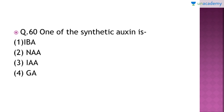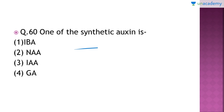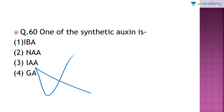Question number 60: Which one of the following is a synthetic auxin? The right answer is option number two — NAA (naphthalene acetic acid) is a synthetic auxin. IBA (indole-3-butyric acid) is both synthetic and natural. IAA (indole acetic acid) is a natural auxin isolated from human urine. GA (gibberellic acid) is unrelated to auxins.